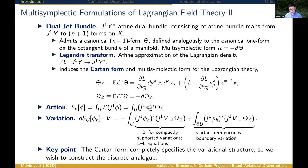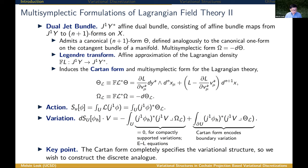Computing the variation of the action yields a term that vanishes on compactly supported variations — this gives the Lagrangian equations — and a boundary term. Under Hamilton's principle with fixed boundary data, the boundary term vanishes. However, explicitly writing it out is important because it encodes the Cartan form, which provides information about the multi-symplectic structure and Noether's theorem. The key point is that the Cartan form completely specifies the variational structure, and we want to construct a discrete analog of it.